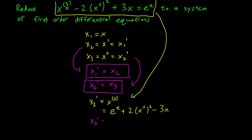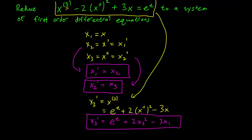So x3 prime is equal to e to the t plus 2x double prime squared, but x double prime is equal to x3. So this is just going to be 2x3 squared minus 3x, but x is just equal to x1, so that's minus 3x1. So there you have it — our system of three equations: x1 prime equals x2, x2 prime equals x3, and x3 prime equals e to the t plus 2x3 squared minus 3x1.